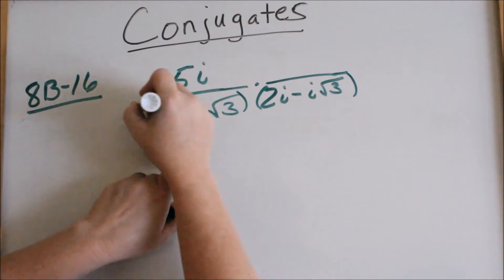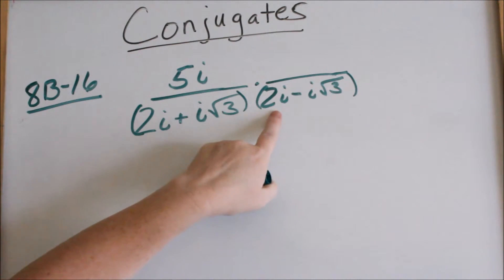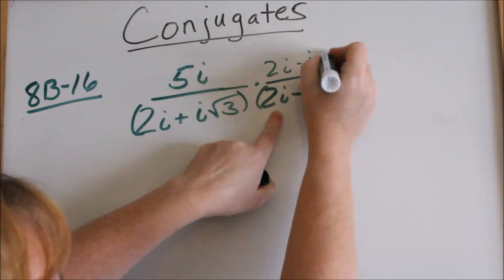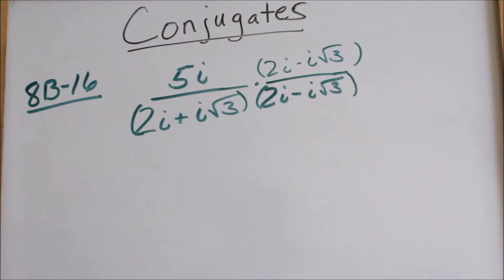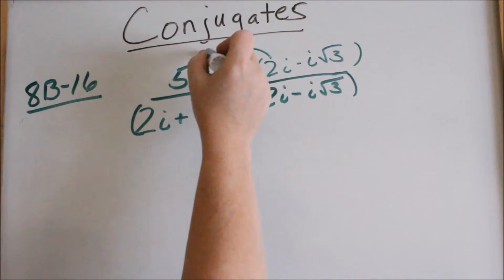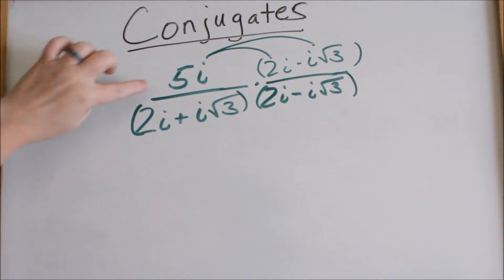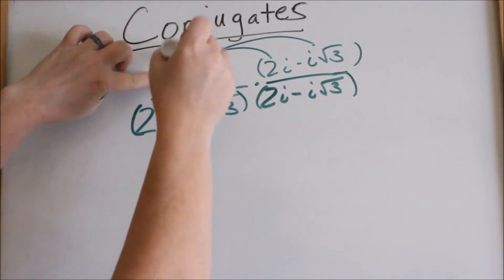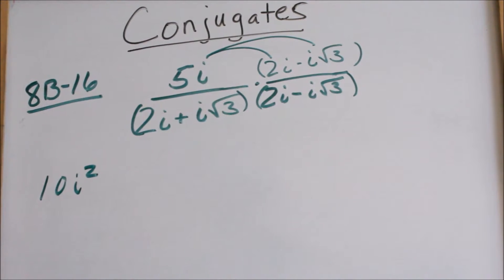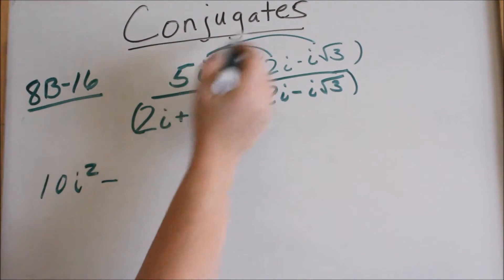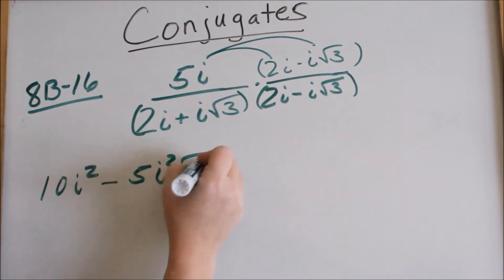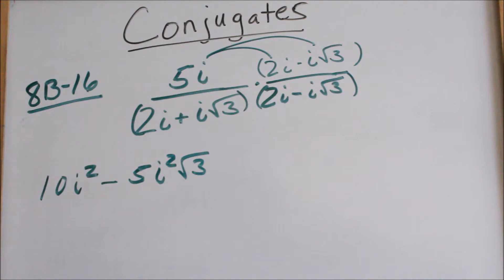If you want to put everything in parentheses to help you, that's okay. If you multiply the denominator by the conjugate, you have to also multiply the numerator by the conjugate. Now it's just a matter of multiplying fractions. In the numerator, you have to distribute this 5i to everything. When I distribute 5i: 5i times 2i is 10i squared — numbers to numbers, letters to letters. Minus 5i times i square root of 3 would be 5i squared square root of 3 — numbers to numbers, letters to letters, radicals to radicals. There's a 1 in front, so 5 times 1 is 5.